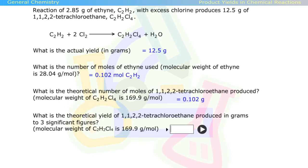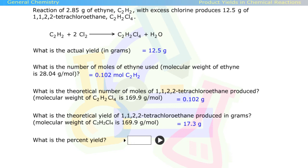What is the theoretical yield of 1,1,2,2-tetrachloroethane produced in grams to three significant figures? 17.3 grams. That's correct. What is the percent yield? 72.3 percent.